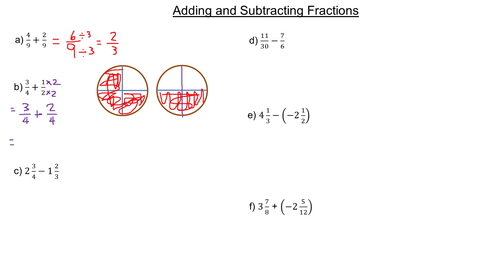We can add three-quarters and two-quarters to get five-quarters. One of the common misconceptions about adding fractions is that you add the denominators — and you don't do that. It's not five-eighths if you add the fours together. The four represents what size the parts are — these are all quarters.